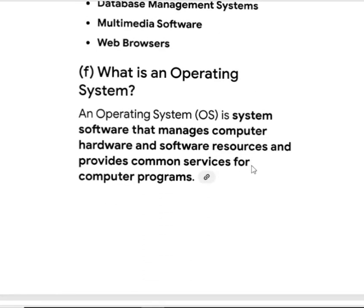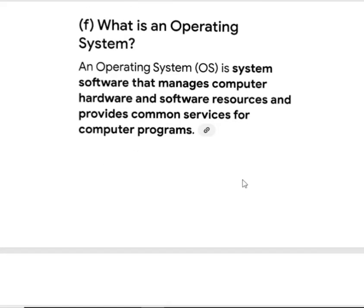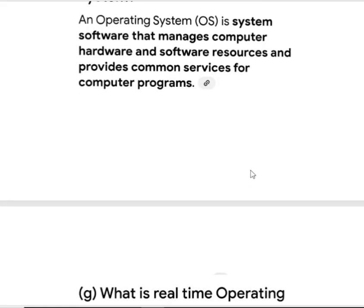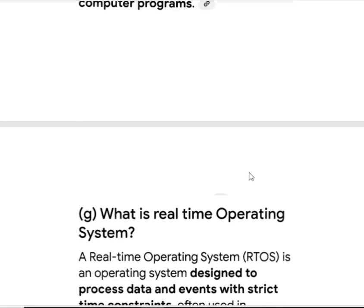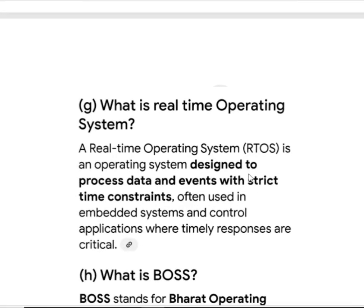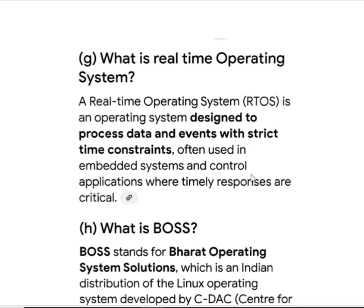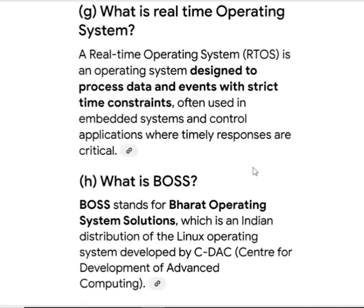What is an operating system (OS)? An operating system is software that manages computer hardware and software resources and provides common services for computer programs. What is a real-time operating system? It is designed to process data and events within strict time constraints.